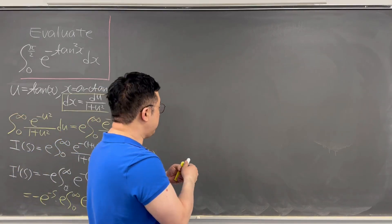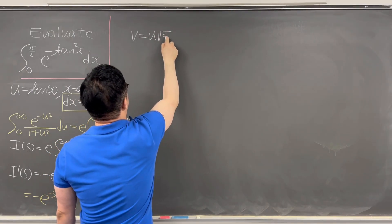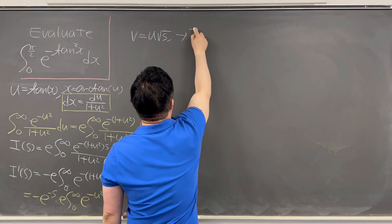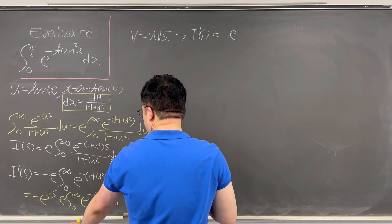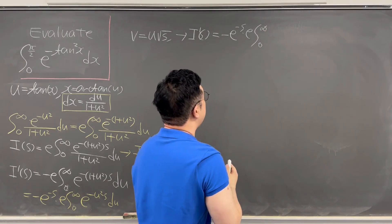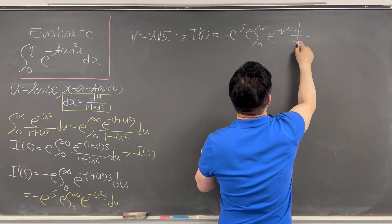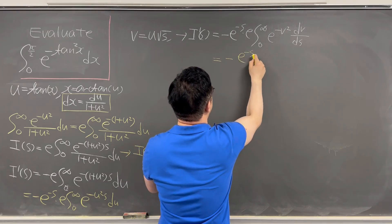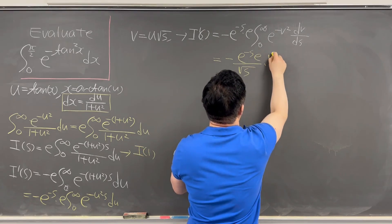We can make another substitution, calling v as u times the square root of s. Using this substitution, I'(s) is looking like negative e to the power of negative s times e, times the integral from 0 to infinity of e to the power of negative v squared, dv over square root of s. This gives us negative e to the power of negative s times e, over square root of s, times square root of π over 2.